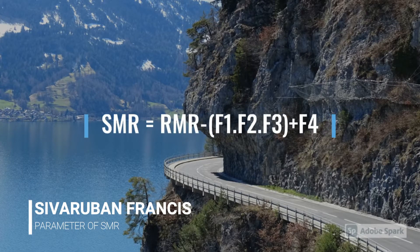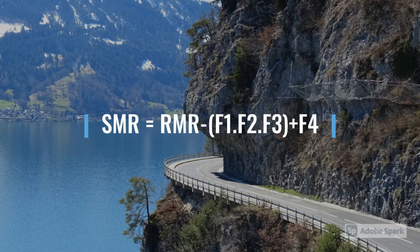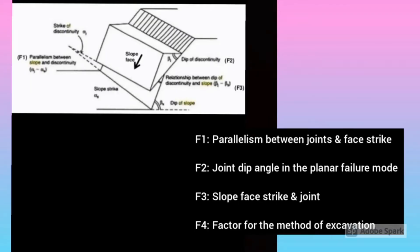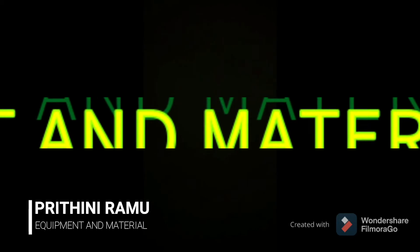Slope Mass Rating can be evaluated using the formula: SMR = RMR - (F1 × F2 × F3) + F4. To determine the value of SMR, the following parameters need to be identified: Factor 1 is the parallelism between joints and slope face strike; Factor 2 is the joint dip angle in the planar failure mode; Factor 3 is the relationship between slope face strike and joint dip angle; and Factor 4 is the factor for the method of excavation.